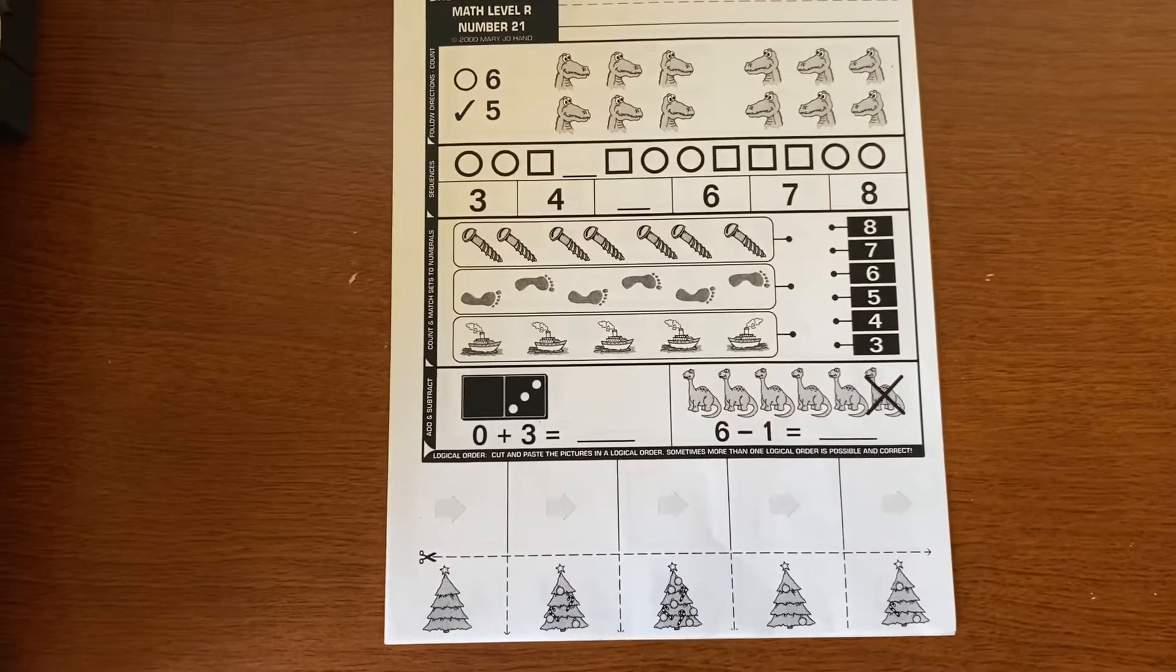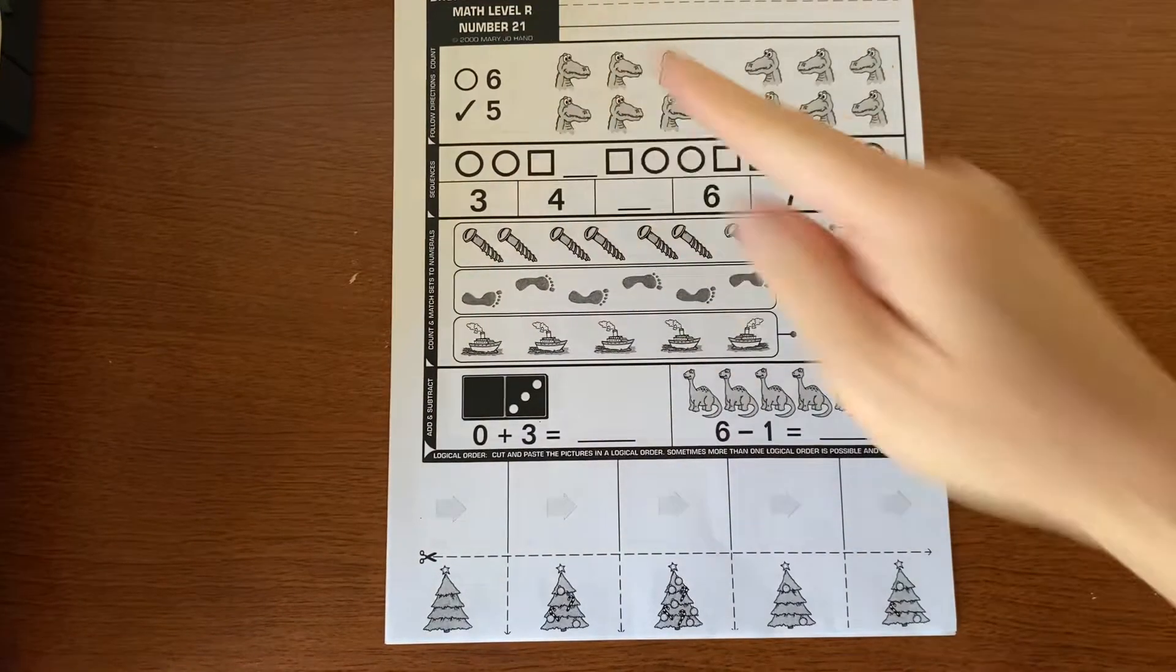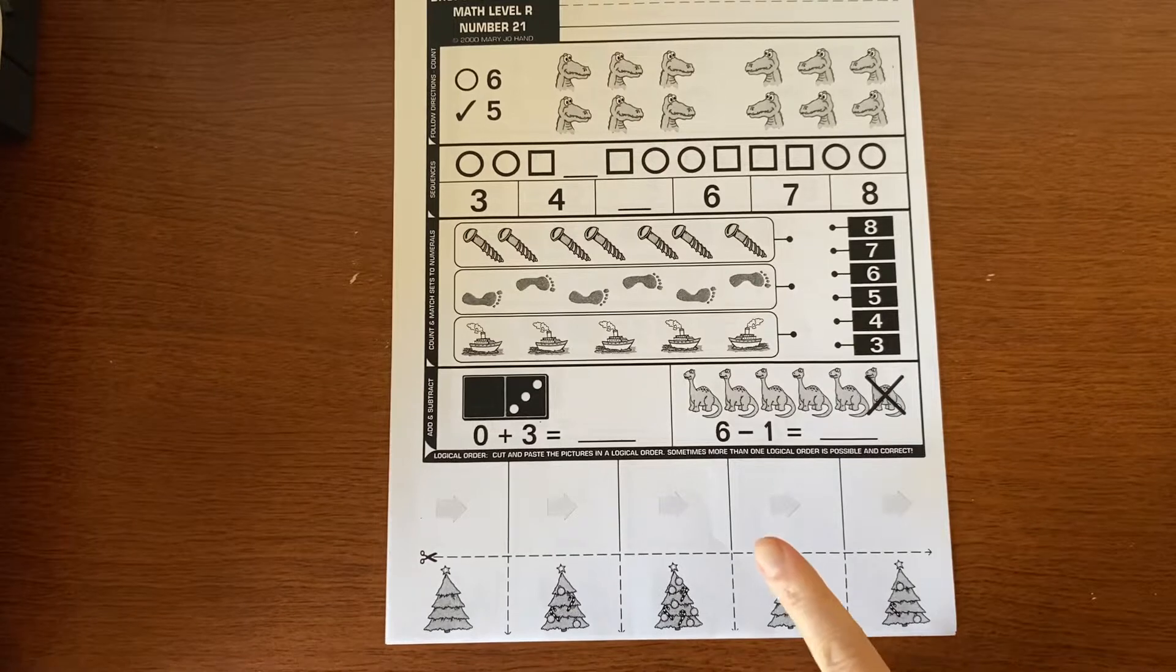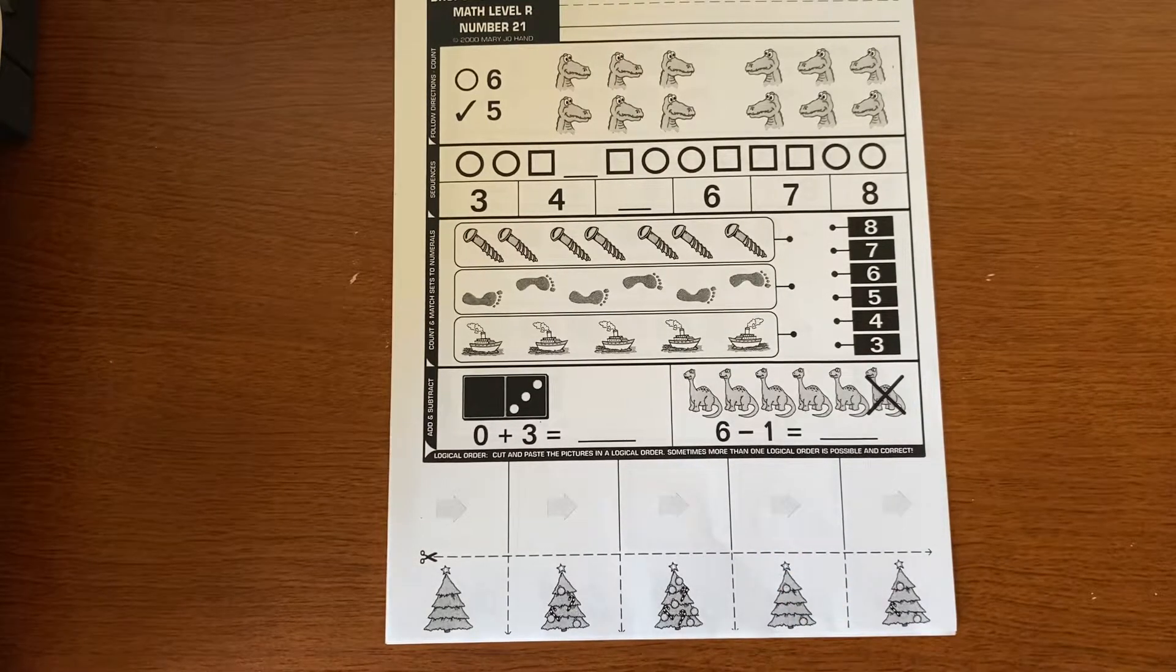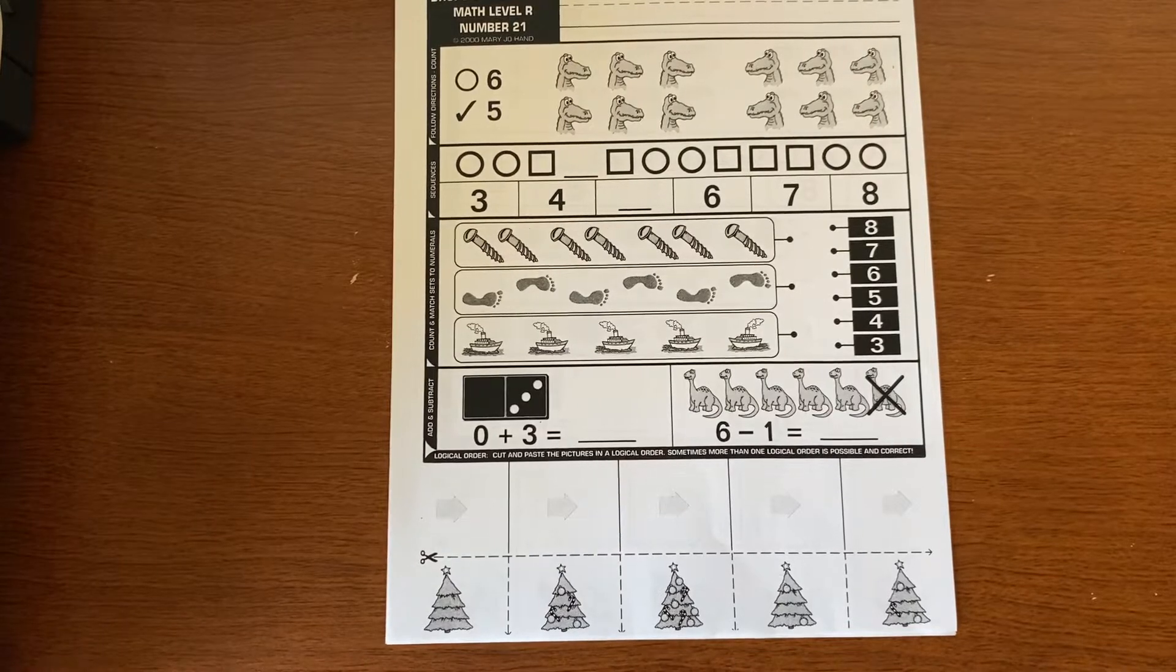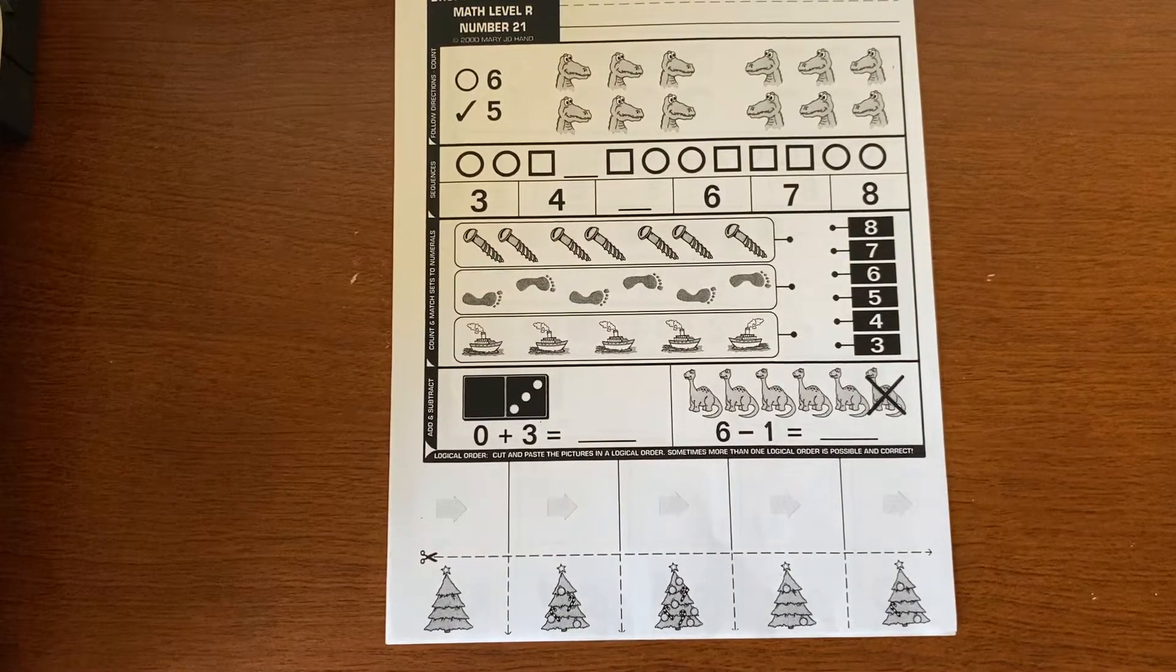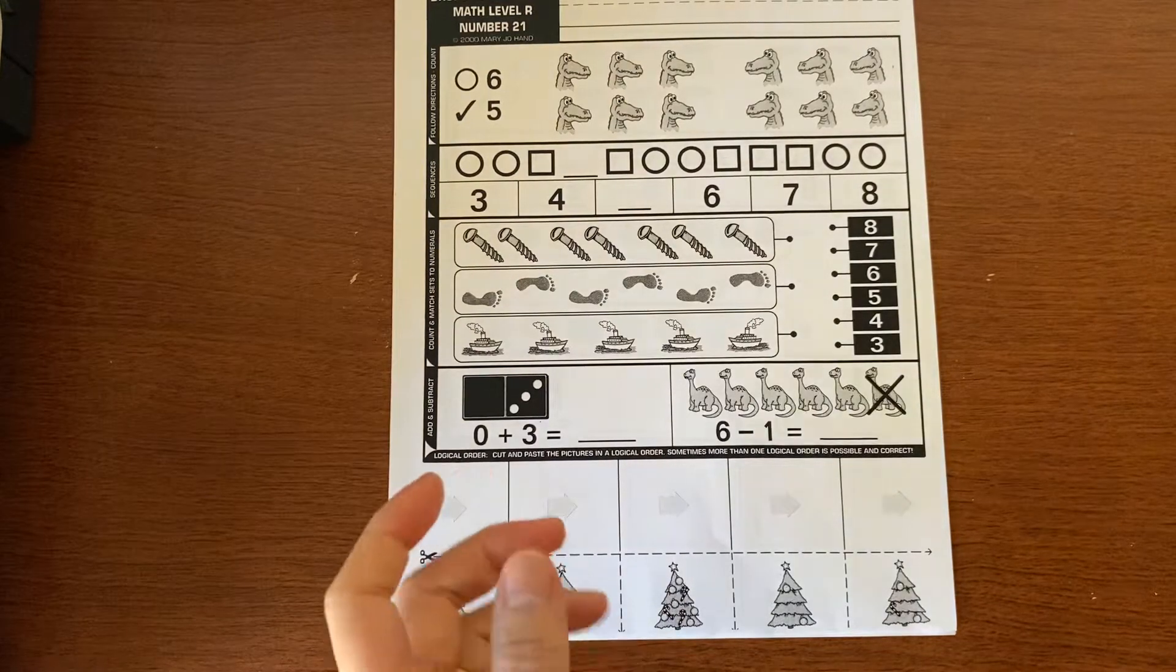Hi Kinders! We're going to be working on our Drops in the Buckets number 21. So you're going to need your page 21 and Drops in the Buckets and a pencil. Mrs. Seto is going to use a marker so it's easier for you to see. And we're going to start with our name. Remember it's March, so we're going to write our first and our last name.